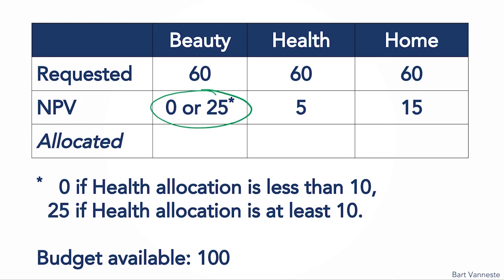How should we allocate our resources? The 25 NPV for beauty is by far the highest, even higher than the NPVs for health and home combined. To capture the 25 NPV for beauty, we need to do two things: we need to invest 60 in beauty and at least 10 in health.